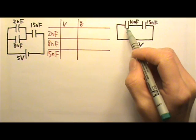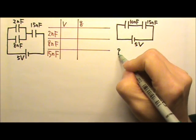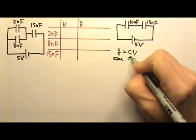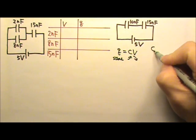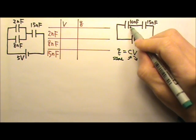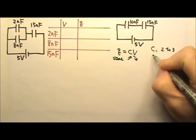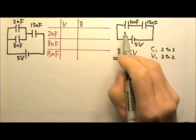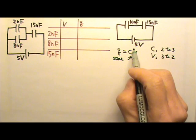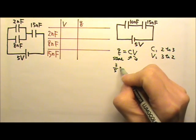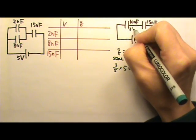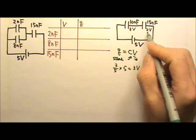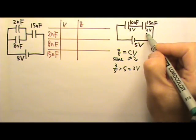Since they are in series, they share the 5 volts but get the same charge — Q equals CV. The one with the larger capacitance gets less voltage. The capacitance ratio is 10 to 15, which simplifies to 2 to 3, so the voltage ratio is 3 to 2. The 10 nanofarad gets 3 fifths of the total voltage: 3 fifths of 5 volts is 3 volts. The other one gets 5 minus 3, which is 2 volts. So the 15 nanofarad gets 2 volts.